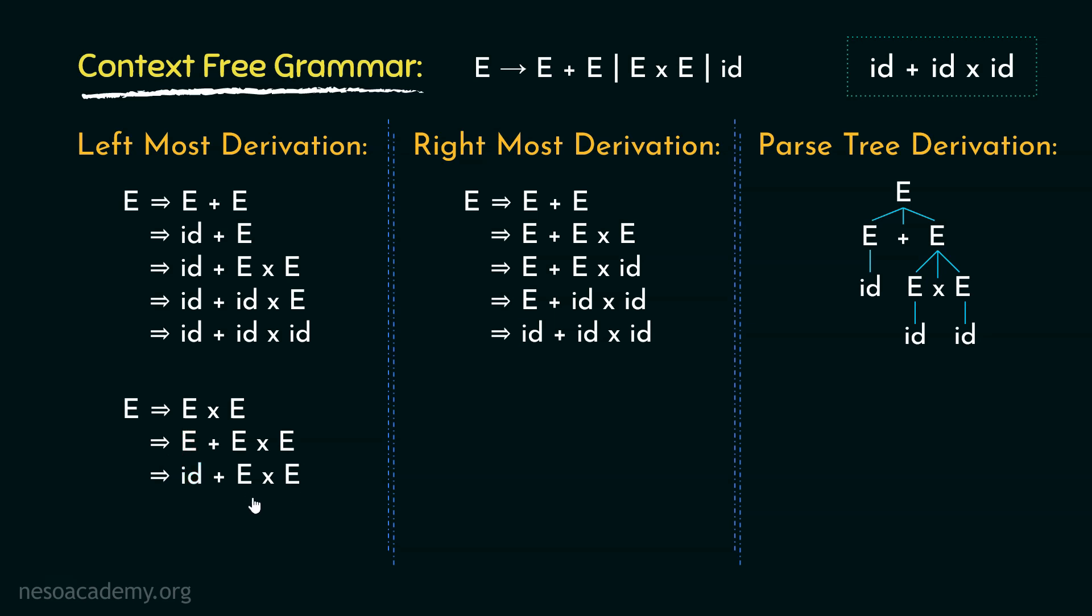Now from these two, this is the leftmost one, so we will derive id again. Now we are left with only one E. Let's expand this one. So we now have derived the string id + id × id.